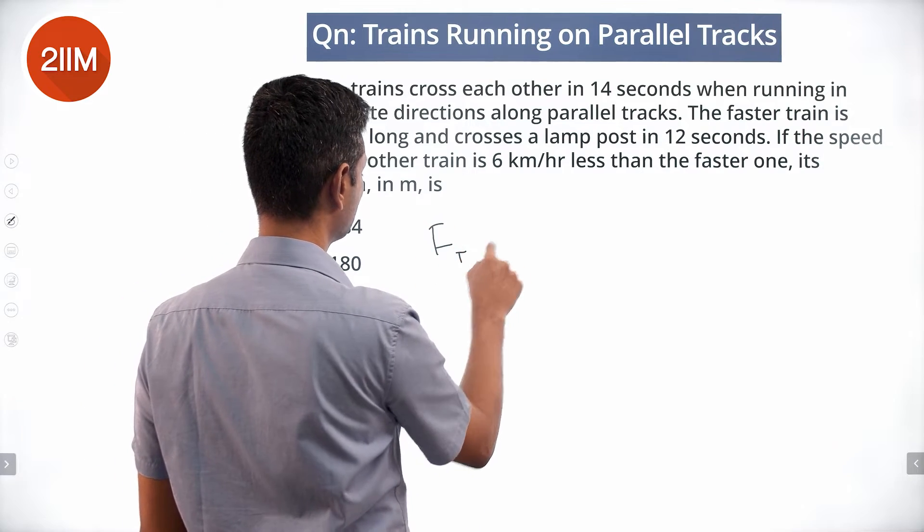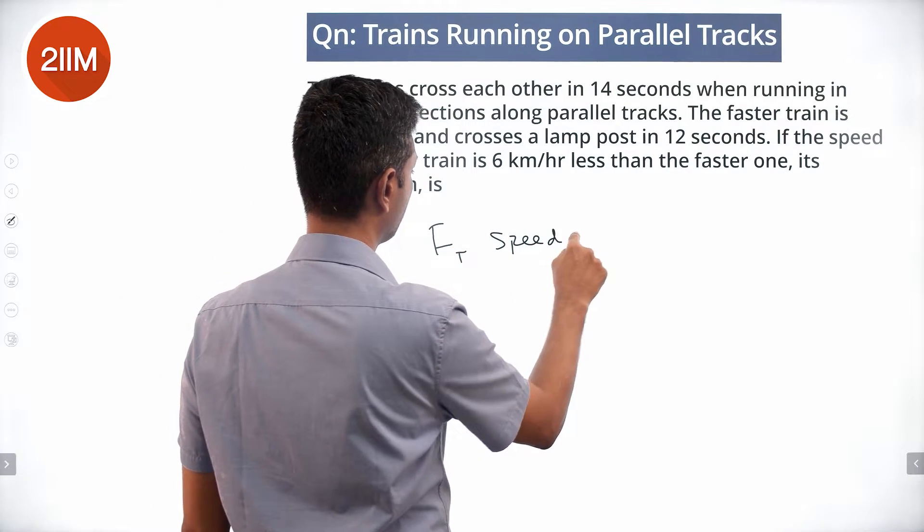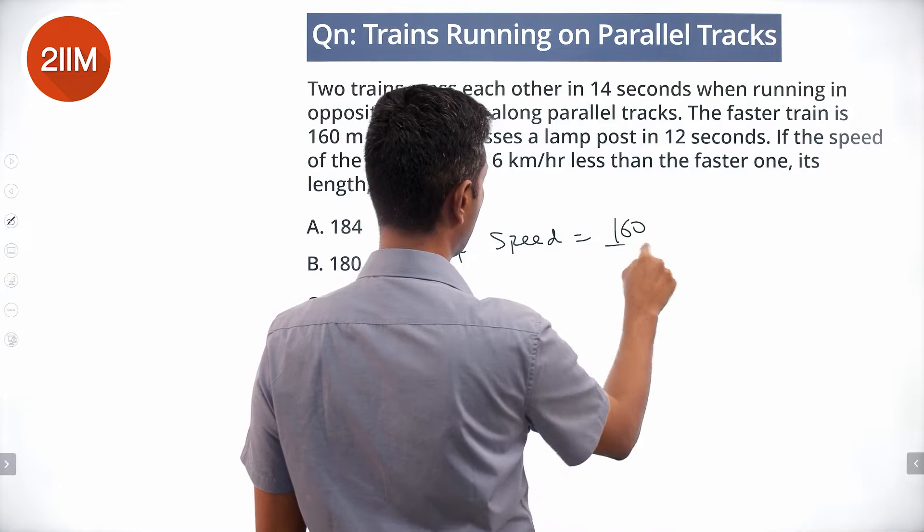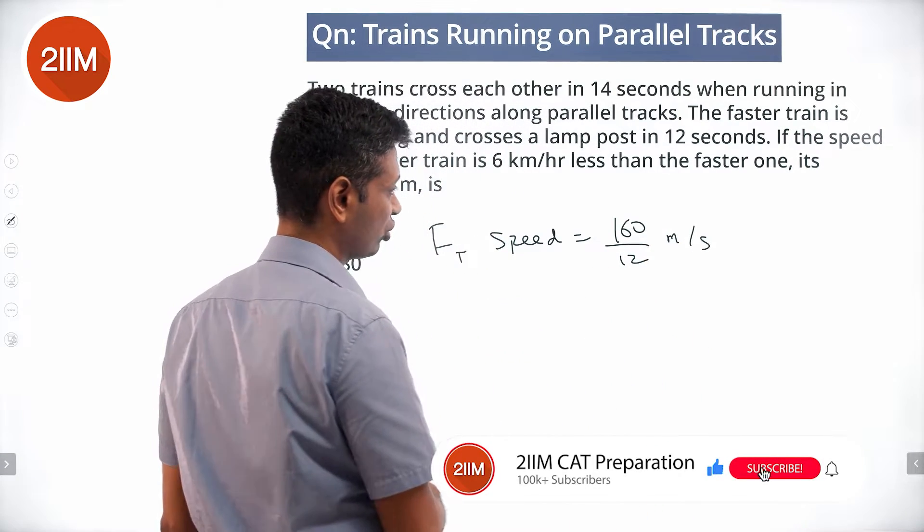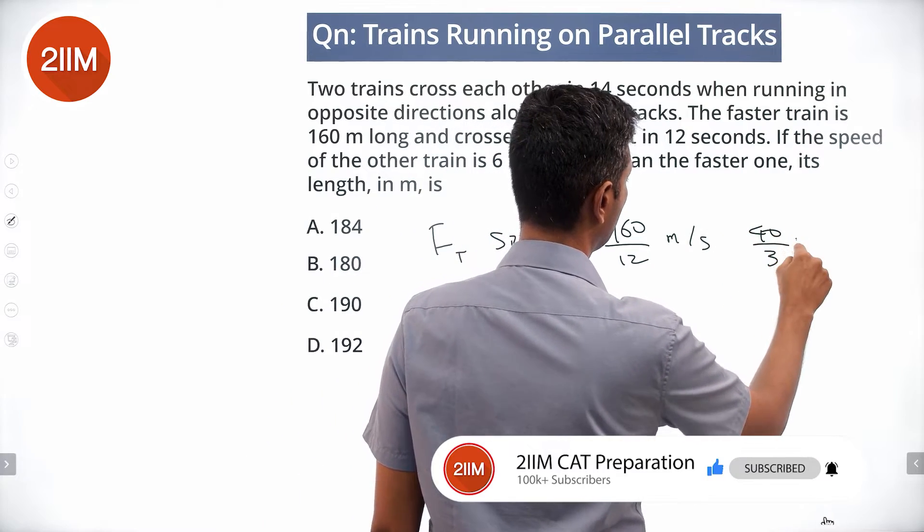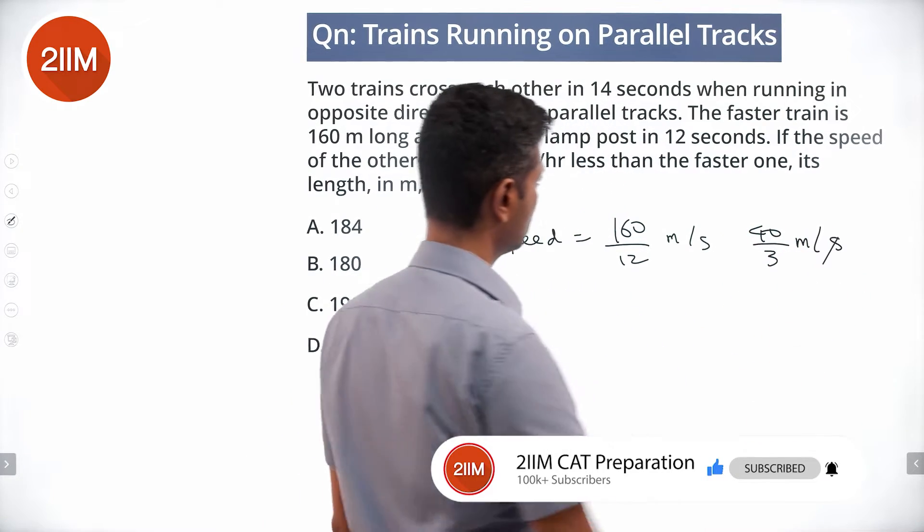The faster train speed is 160 by 12 meters per second, which simplifies to 80 by 6 or 40 by 3 meters per second.